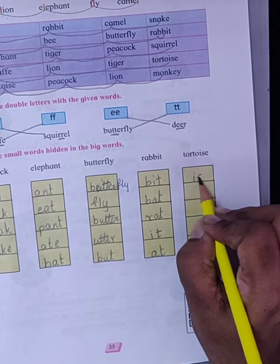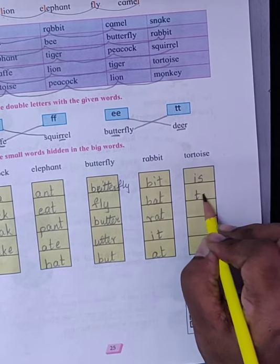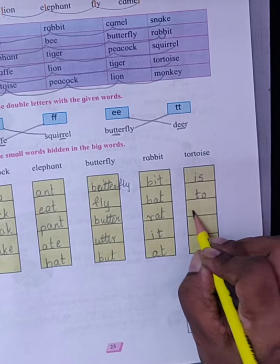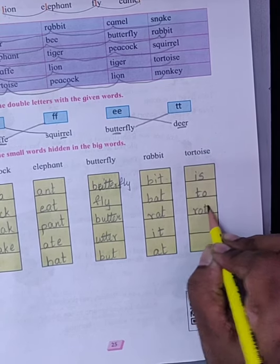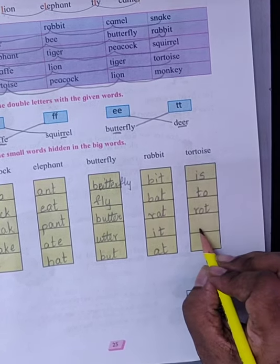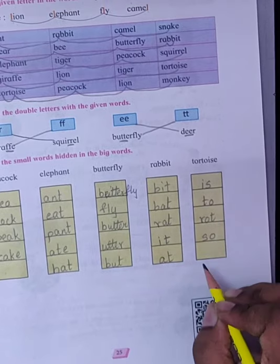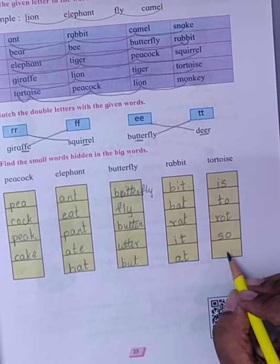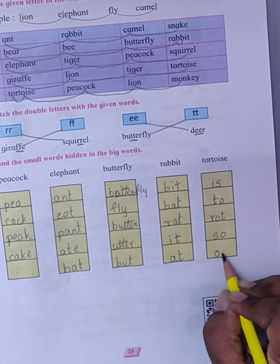Tortoise. Here it is: is, to, rot, so, and or. All.